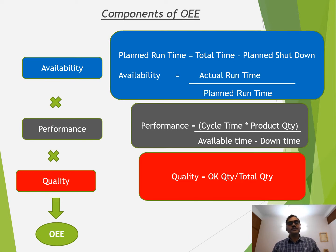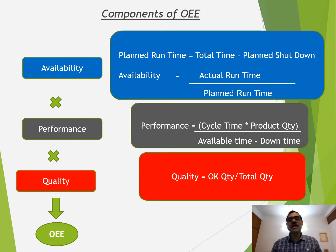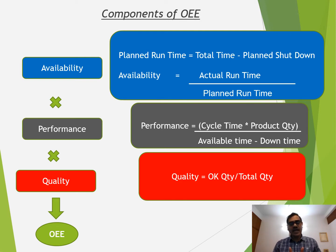Then there is Performance. Performance is basically cycle time multiplied by the product quantity — how much time we actually used to produce that quantity — divided by the actual runtime. The actual runtime means the available time minus the unplanned downtime. So how much of that available time did we actually use? That comes into performance.